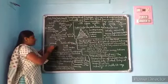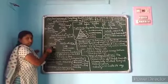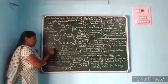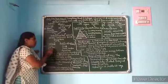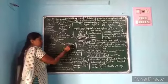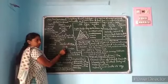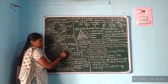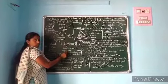Examples of natural ecosystems include river, sea, lake, forest, mountains, and ocean. Artificial means man-made — examples include agricultural land or a field, dam, garden, and aquarium.